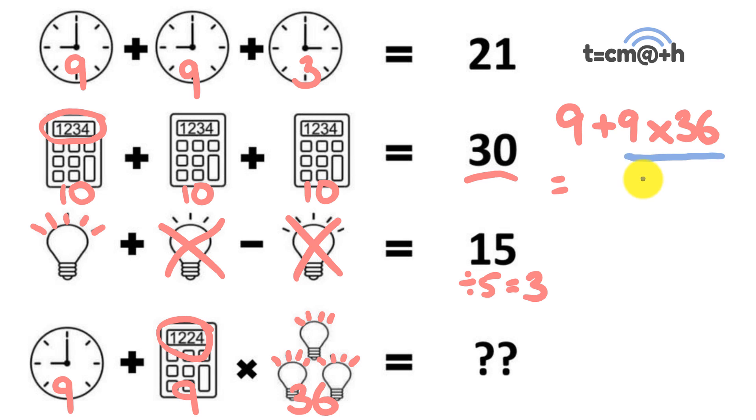Nine times 36 is going to be 324, and to that we're going to be adding nine. Finally, we'll get our last part of our answer, which is nine plus 324. Our answer is 333, and that is the correct answer.